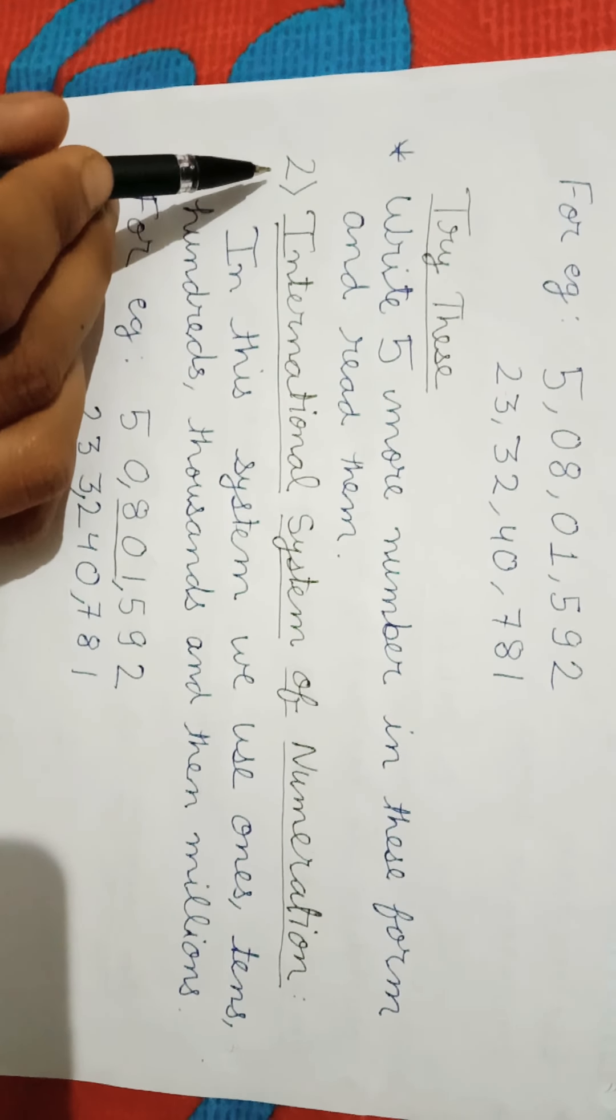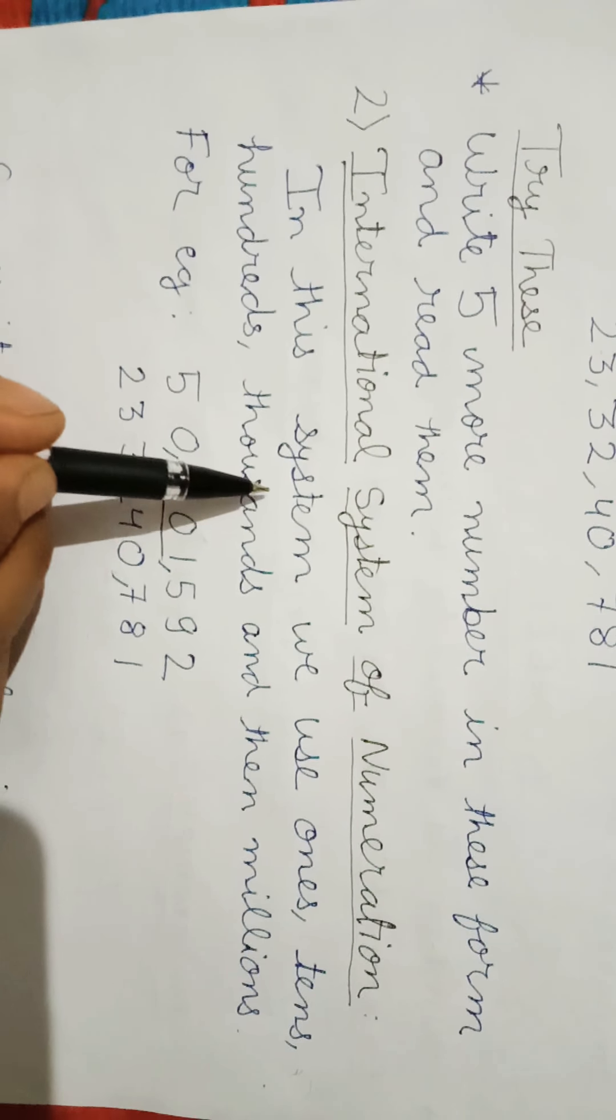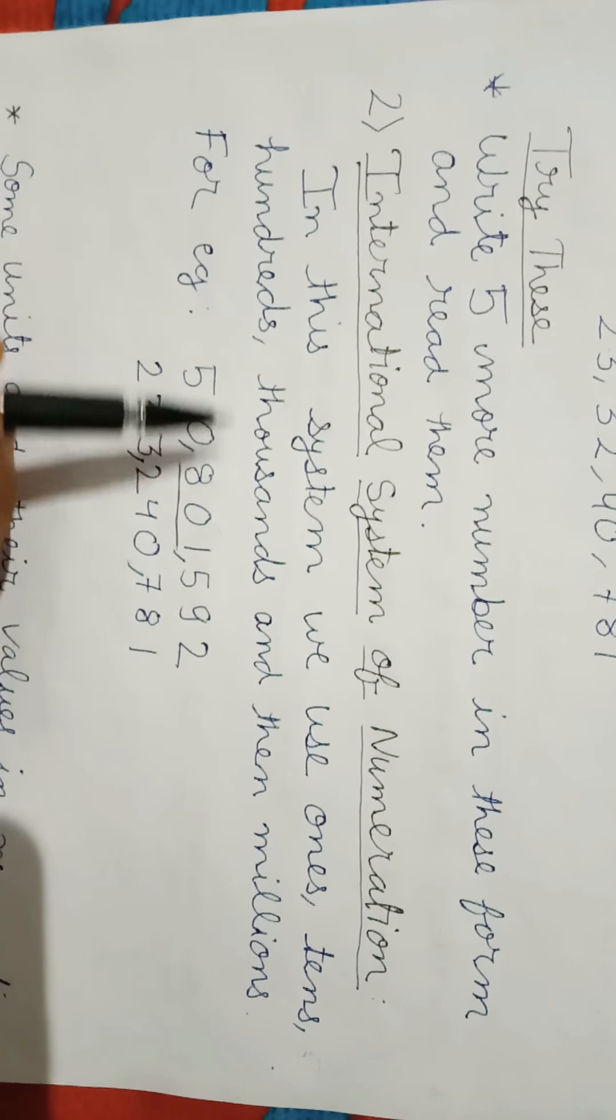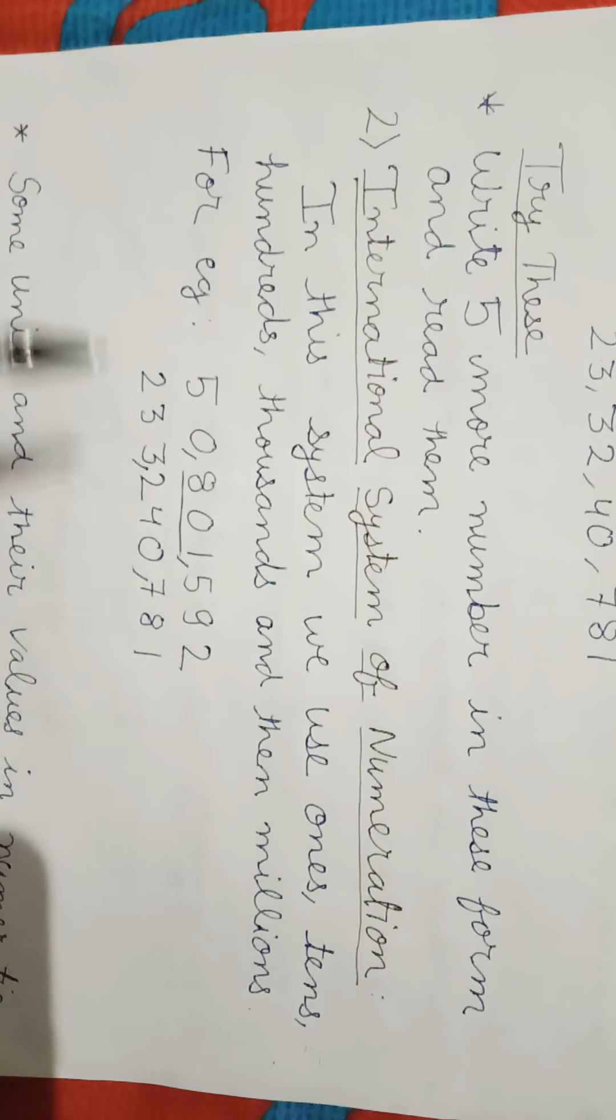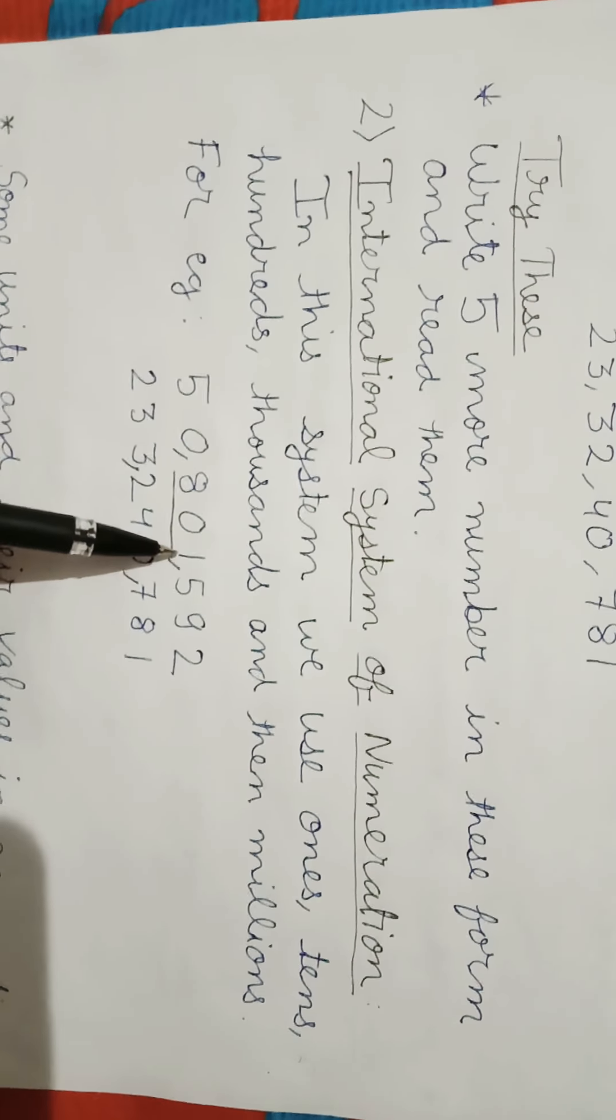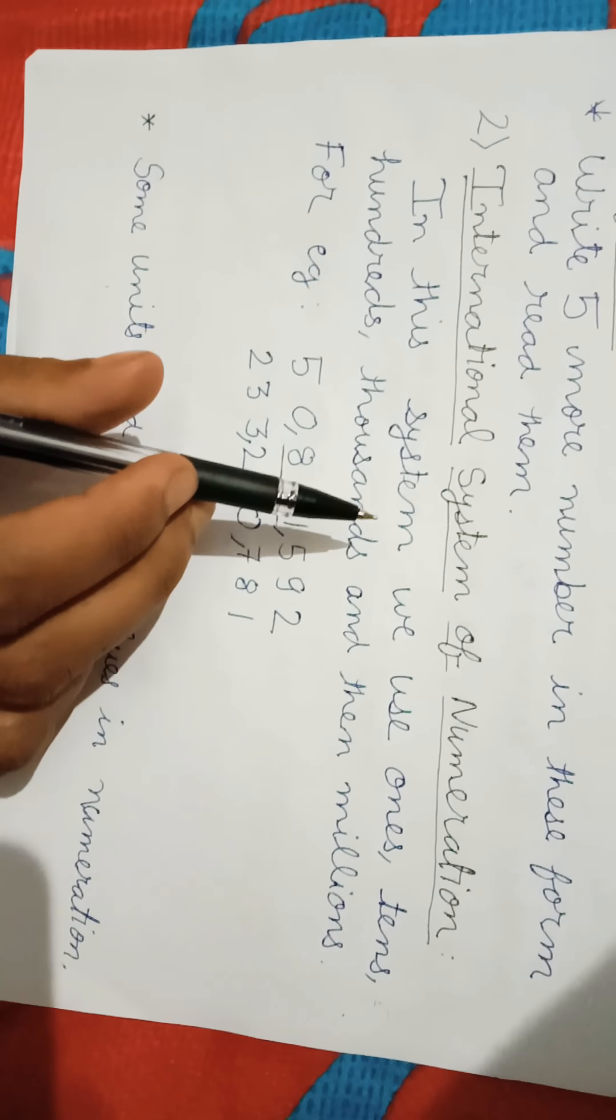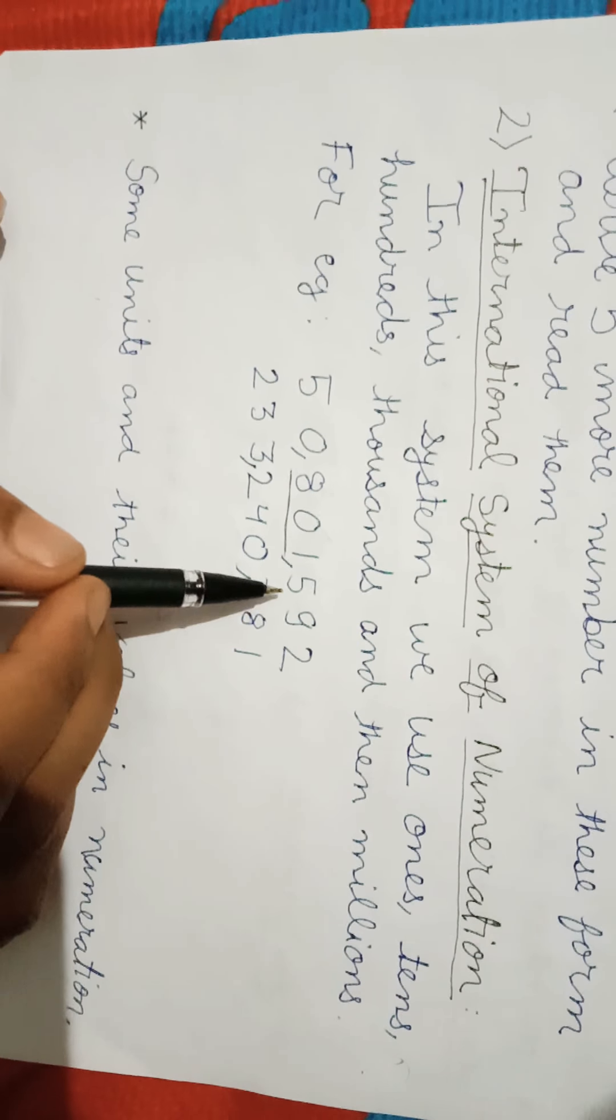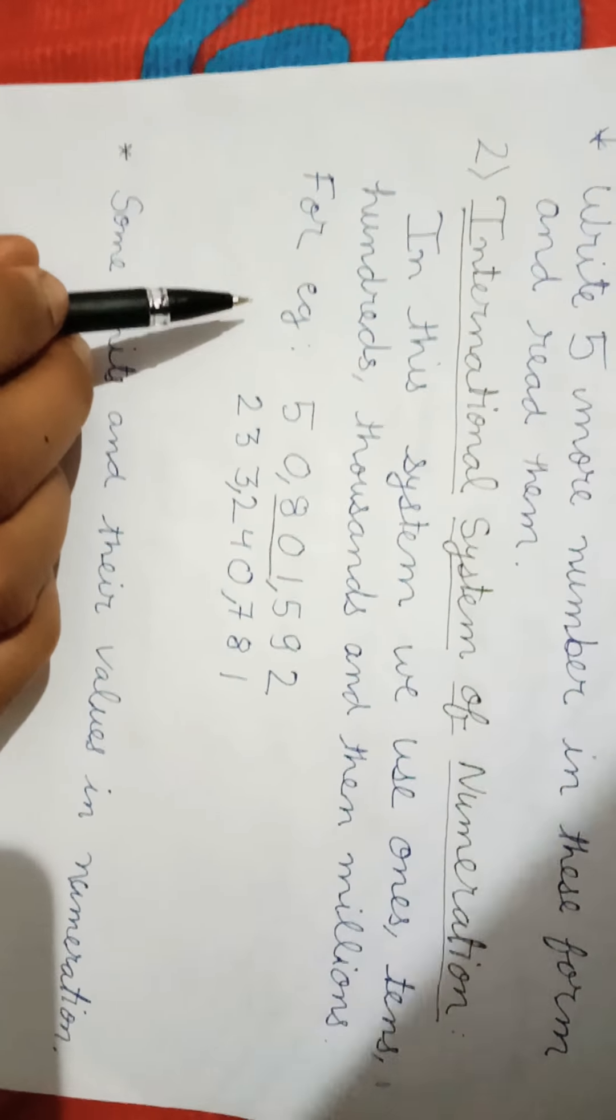Let's come to our second topic which is international system of numeration. In this system we use ones, tens, hundreds, thousands, and then millions. For example, 50801592. In international system of numeration we apply our first comma from right side at 3 digits, and then again 3 digits, then again 3 digits.